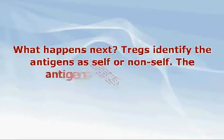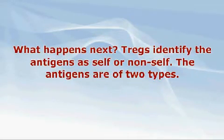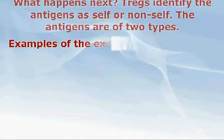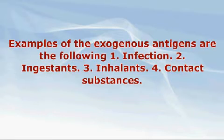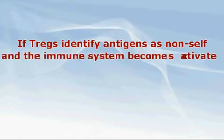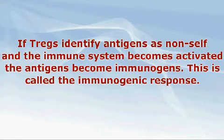What happens next? TREGS identify antigens as self or non-self. Antigens are divided into two types: exogenous and endogenous. Examples of exogenous antigens include: one, infection; two, ingested substances or ingestants such as food and drink; three, inhaled substances or inhalants such as pollen and atmospheric pollutants; four, contact substances such as deodorant and soaps. If TREGS identify antigens as non-self, the immune system becomes activated, the antigens become immunogens, and the immune system activation is called the immunogenic response.